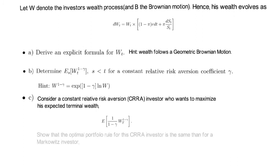Show that the optimal portfolio rule for that CRRA investor is the same as for a Markowitz investor. Meaning π has to equal μ minus r over σ times 1 over γ times σ.